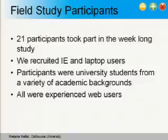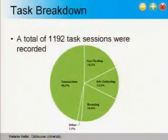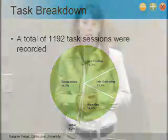We had 21 participants in our week-long study. We recruited Internet Explorer and laptop users — hoping to capture both at-home and school or work usage — who were university students from a variety of academic backgrounds including computer science, arts, and science, and were all fairly experienced web users. Over the course of the study, we recorded 1,192 task sessions, where almost half were transactions — typically online actions, with about 80% being web-based email. About 20% were browsing, closely followed by fact-finding and information gathering, and a small number were categorized as other — typically tasks involving maintaining or updating a web page.